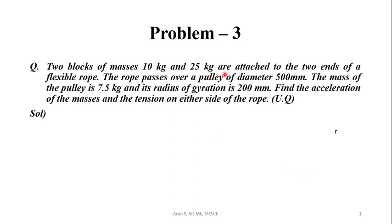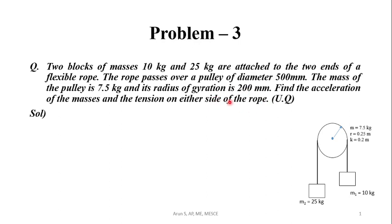Two blocks of masses 10 kg and 25 kg are attached to the two ends of a flexible rope. The rope passes over a pulley of diameter 500 mm. The mass of the pulley is 7.5 kg and its radius of gyration is 200 mm. Find the acceleration of the masses and the tension on either side of the rope. The radius is 0.25 m and the radius of gyration is 0.2 m. M2 is 25 kg and M1 is 10 kg.